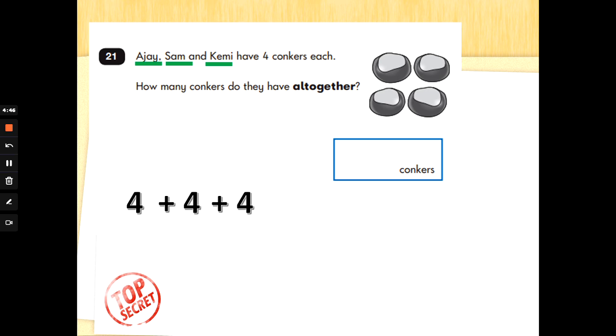Look for doubles. Double 4 is 8. And add the 4. 8, 9, 10, 11, 12. 12 conkers.